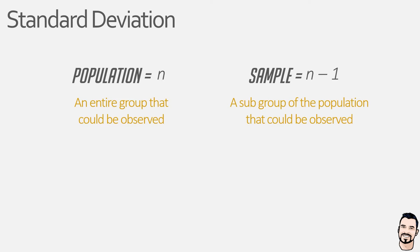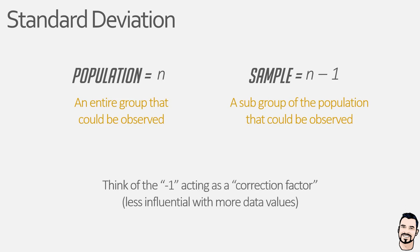Now, when it comes to our mathematical equation, this n-1 acts as a sort of correction factor, which is highly influential when there are only a few observations. However, as we add more data points to our data set, it becomes less influential as we naturally get closer to the analysis of an entire population.